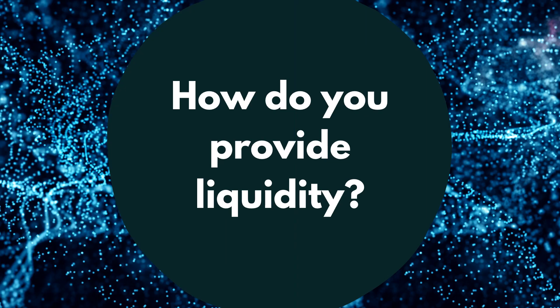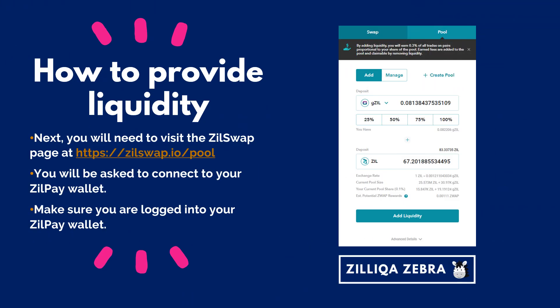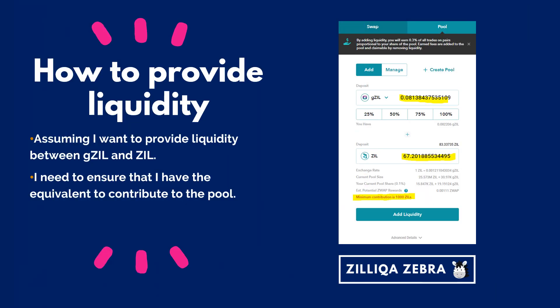The burning question that everyone wants to know is how to provide liquidity to ZillSwap. In order to provide liquidity, you will now need to visit the ZillSwap page at zillswap.io/pool. You will then be asked to connect to your ZillPay wallet. Make sure that you are logged into your ZillPay wallet and then connect it to ZillSwap.